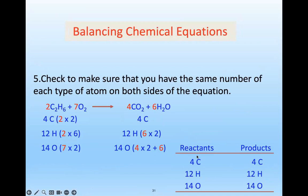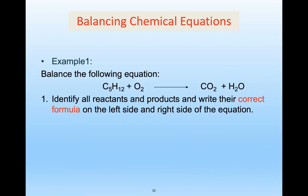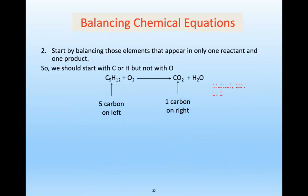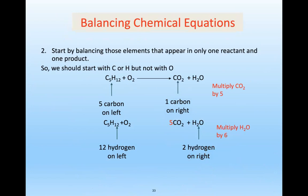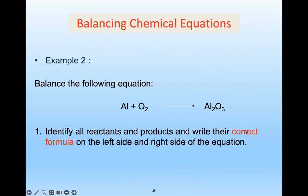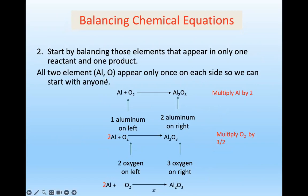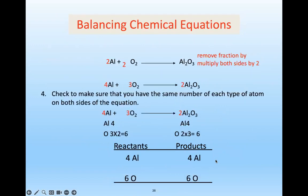Practice example: balance aluminium plus oxygen → aluminium oxide (Al2O3). Start with aluminium — 1 on the left, 2 on the right, so put 2 in front of Al. Then balance oxygen: multiply O2 by 3/2, then multiply both sides by 2 to give 4Al + 3O2 → 2Al2O3. Check: 4 aluminium and 4 aluminium, 6 oxygen and 6 oxygen — balanced.